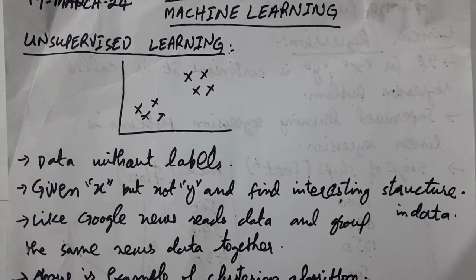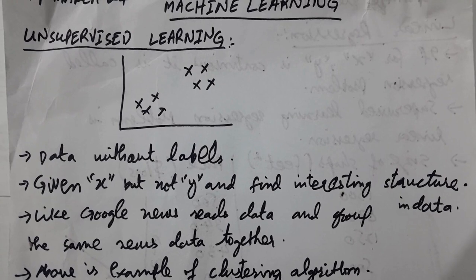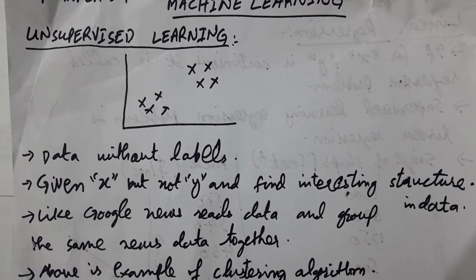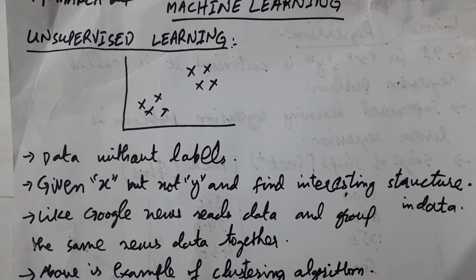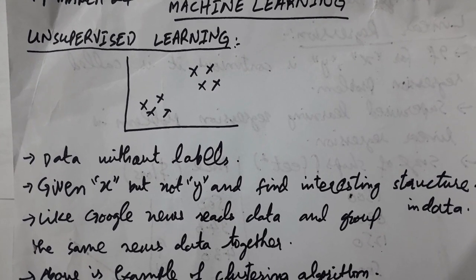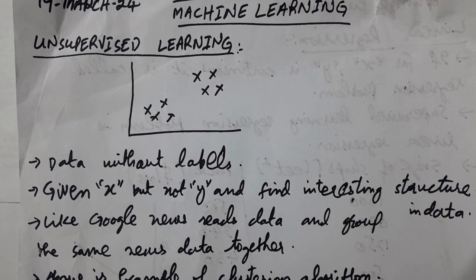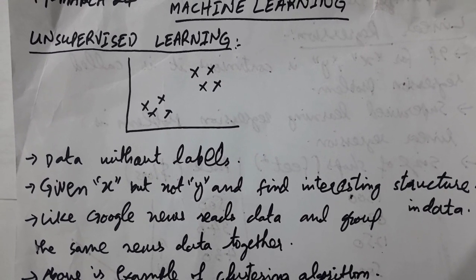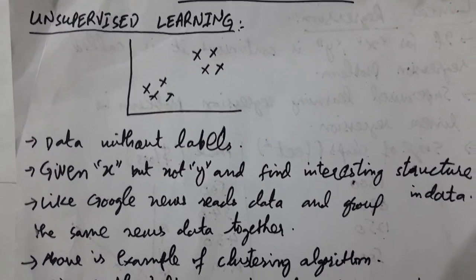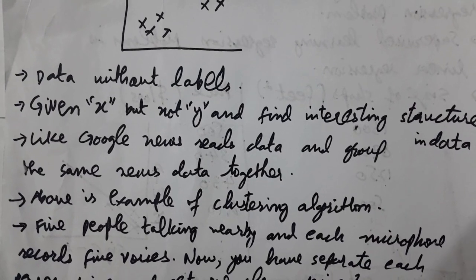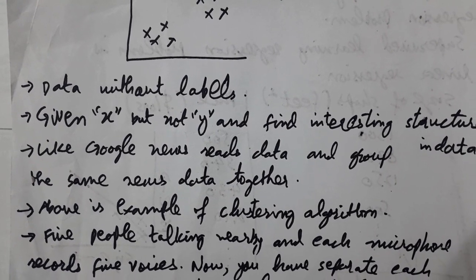An interesting structure or relation will be found between x and y for the prediction of y. For example, we have Google News and daily we get some updates. After some time, Google News combines or groups all the same type of data. For example, if I am interested in gold rates, on a daily basis I take gold rates of different countries from Google News, and after some time Google News makes a group of all that data.